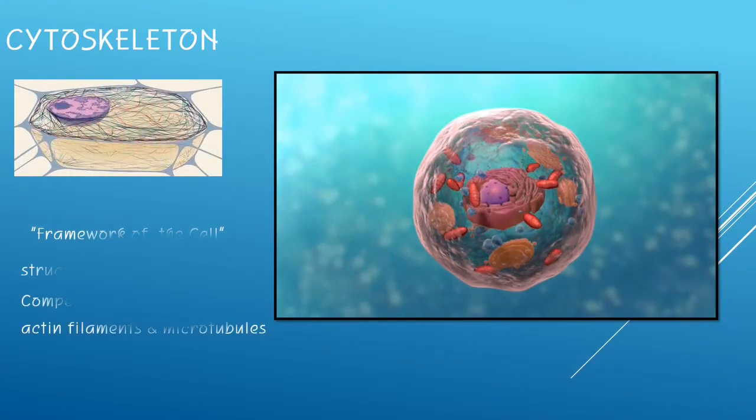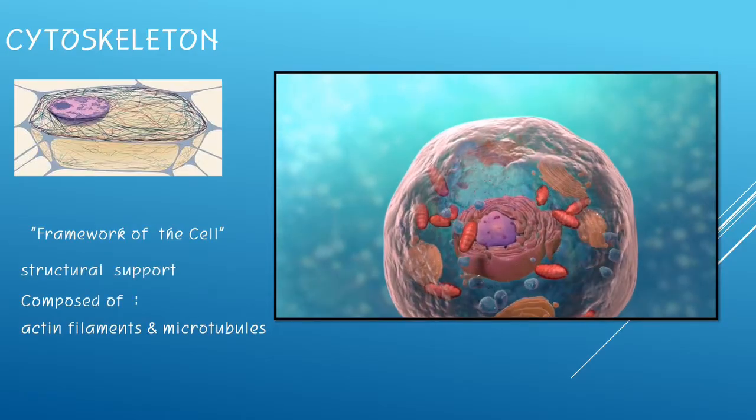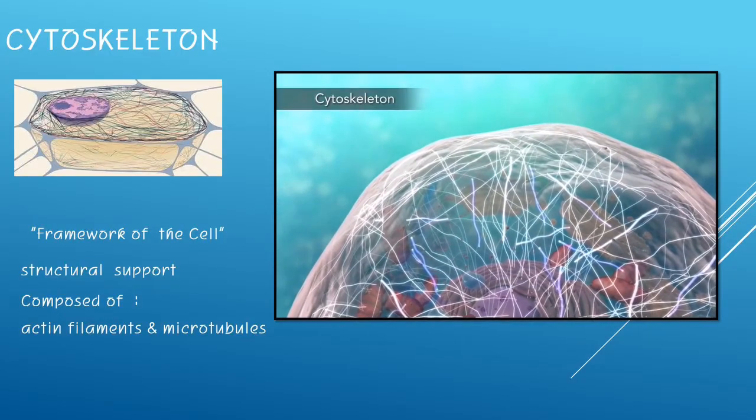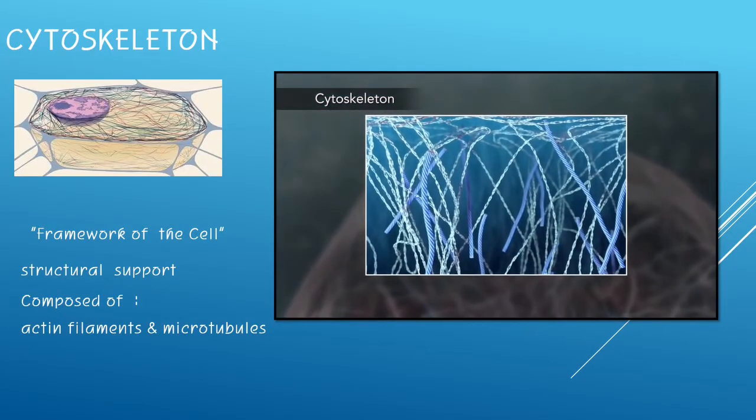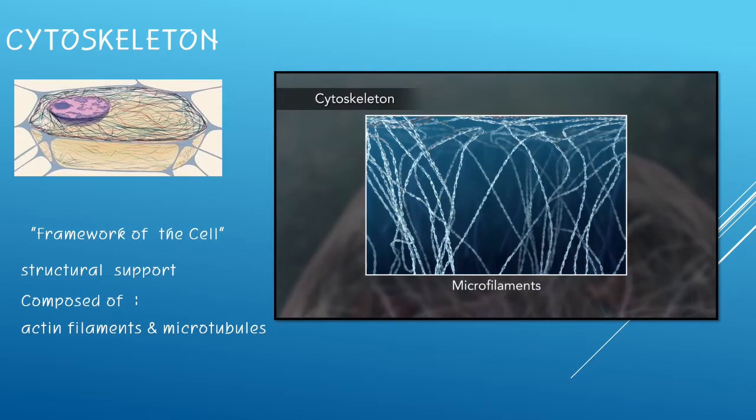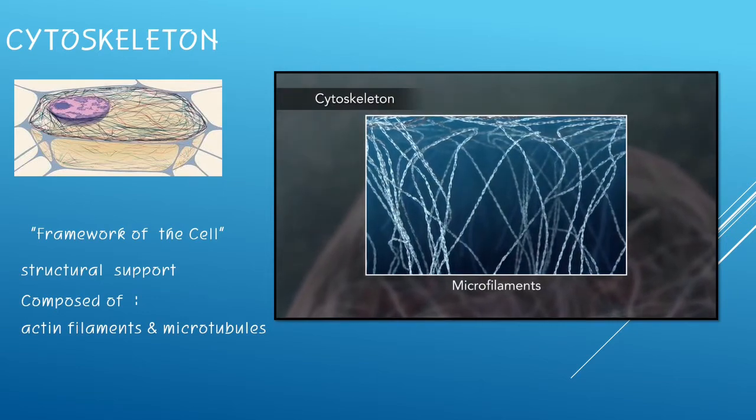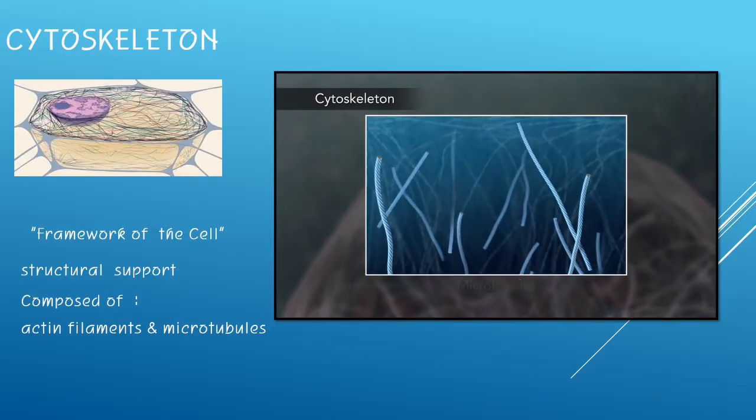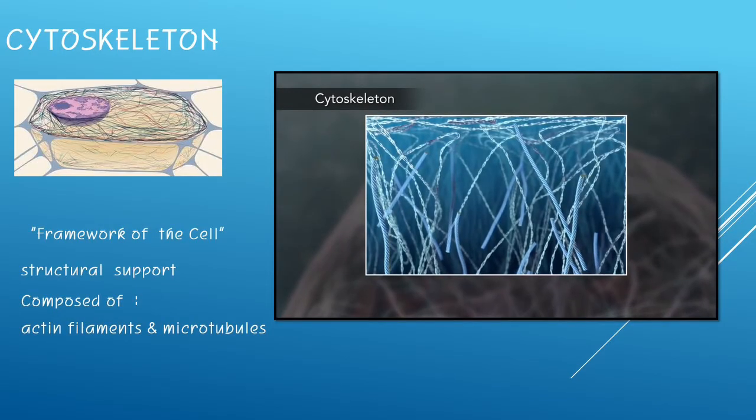The cytoskeleton maintains the shape of the cell, or it is regarded as the framework of the cell. It is a structural support that includes thread-like microfilaments made of proteins and the microtubules, which are thin, hollow tubes.